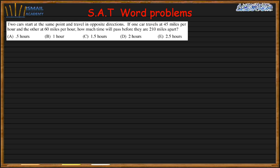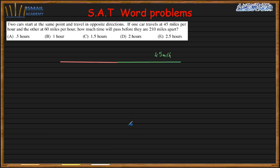Two cars start at the same point and travel in opposite directions. Car A starts from this point and travels in one direction, and car B starts from the same point and travels in the opposite direction. One car travels at 40 miles per hour and the second one travels at 60 miles per hour. How much time will pass before they are 210 miles apart?